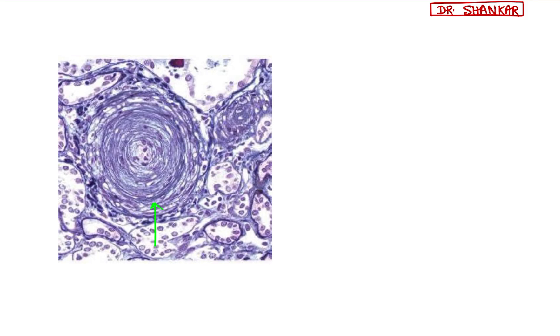Next, coming to another biopsy image also showing onion skin appearance. This is an arterial biopsy image of a patient with scleroderma. In case of scleroderma, this type of hyperplastic arteriosclerosis is also seen. Arterial onion skin lesion is also seen in scleroderma because of excessive smooth muscle proliferation or sclerosis.